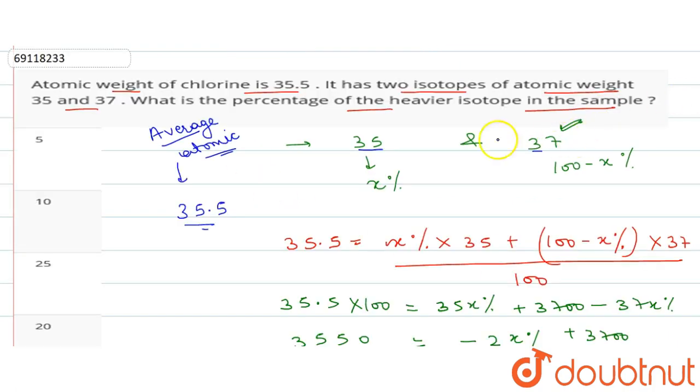Now, we need 100 minus x. Since x is 75 percent, 100 minus 75 equals 25 percent. That means the heavier isotope Cl-37 is 25 percent. So this is the correct option.